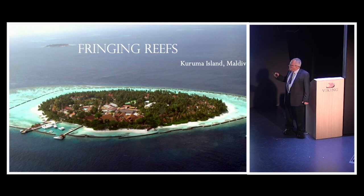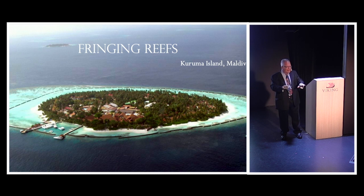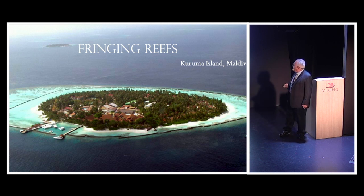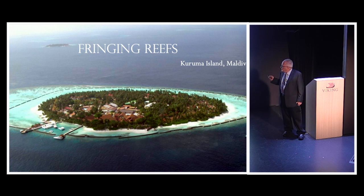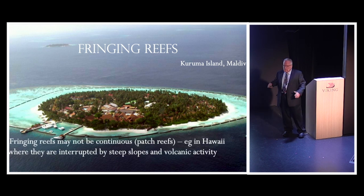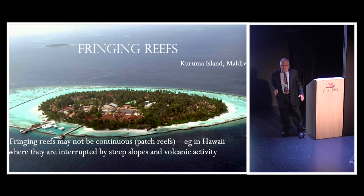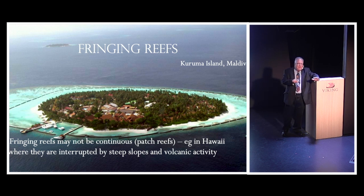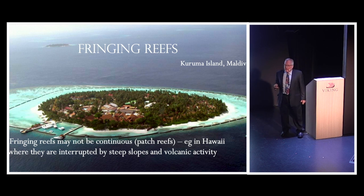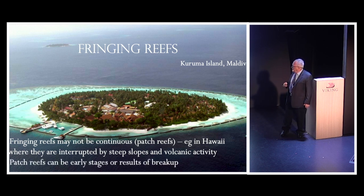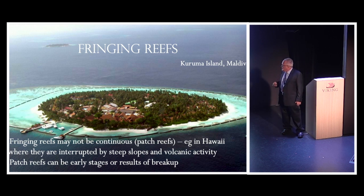We start out with a fringing reef — a reef growing out from the shore, starting in shallow water where they have lots of light and the reef can build up and spread out from an island like this one in the Maldives. Fringing reefs can also be broken up — sometimes called patch reefs — where the reef has been broken at certain points or is just starting to form and hasn't filled in completely. The Maldives is one of the countries made entirely of coral reefs.